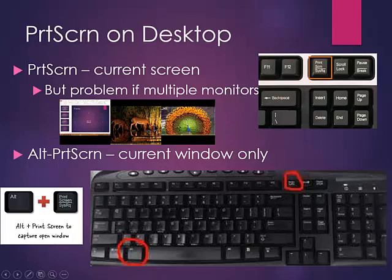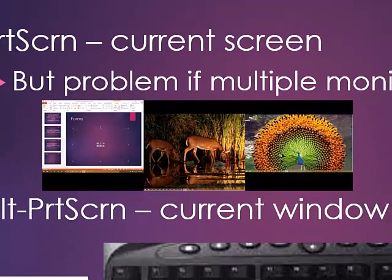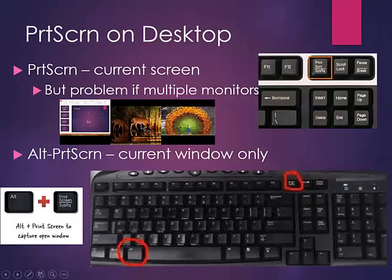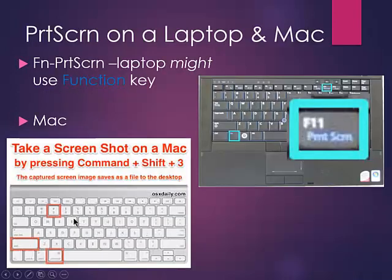But if you have multiple monitors — like I do, I have three monitors attached — then it kind of makes a mess. In that case, what you do is use ALT+Print Screen. You can see down here in the lower left-hand corner where you have ALT, and then Print Screen up there. ALT+Print Screen takes only the current window. You could also use it if you had one window open on top of another, like a dialog box, to capture just that one current window.